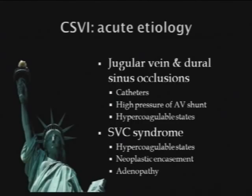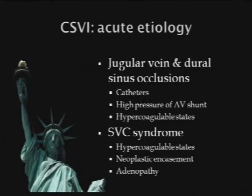The acute etiologies of cerebrospinal venous insufficiency include jugular vein and dural sinus occlusions resulting from instrumentation and catheters, from high pressures in AV shunts, and hypercoagulable states, as well as in the supravenic cable syndrome that extends upward and prevents drainage of the normal structures. Also, neoplastic encasements can cause those obstructions.